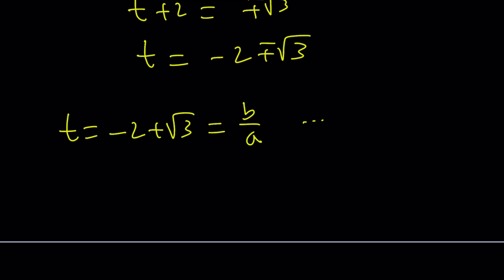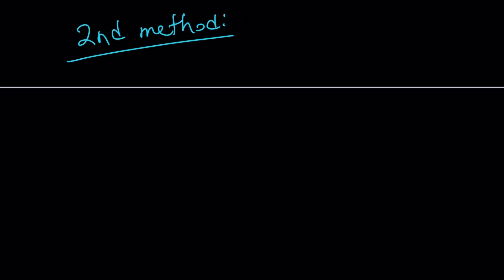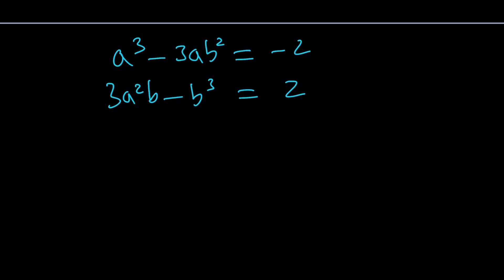Let me rewrite the original problem: a³ - 3ab² = -2 and 3a²b - b³ = 2. When you look at this, you probably notice it looks like the binomial theorem. a³ - 3a²b + 3ab² - b³ = (a - b)³. In our expression, the signs don't quite match up. But if we twist this in the complex direction, we'll be good.